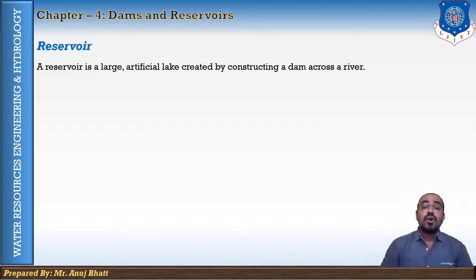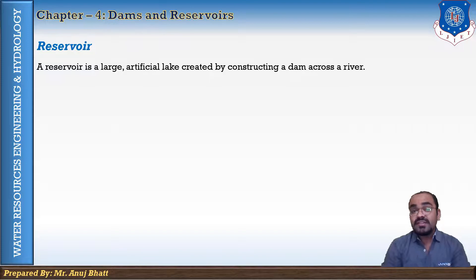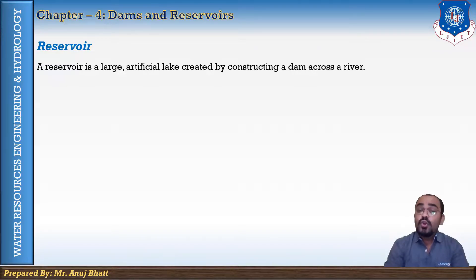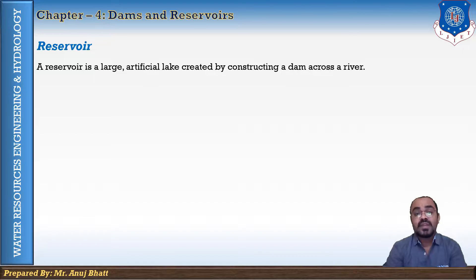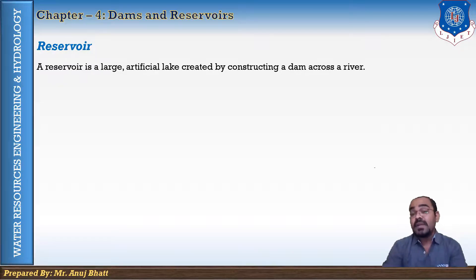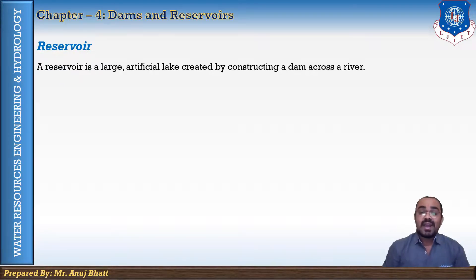The flow in a river generally varies considerably during different periods of the year. It may carry little or no water during some periods and it may carry a huge amount of water after heavy rains in the monsoon. During the period of low flow, it is not possible to meet the water demand for various purposes such as irrigation, water supply, or electric power generation.